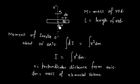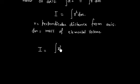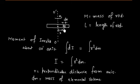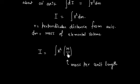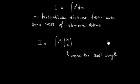The distance from the axis is x, so we have x². The elemental length is dx. To find the mass of this elemental portion: M is the mass of length L, so mass per unit length is M/L. This elemental portion has length dx, so dm = (M/L) dx.